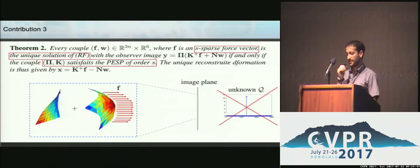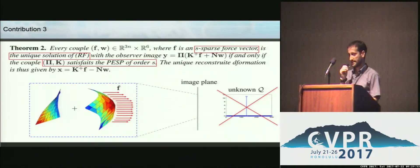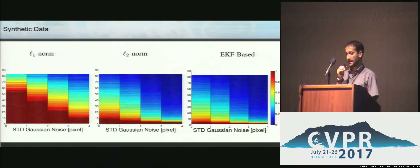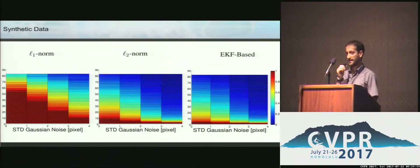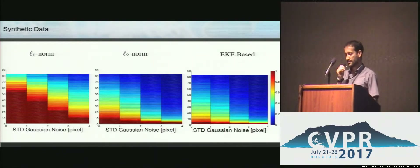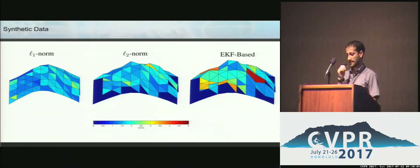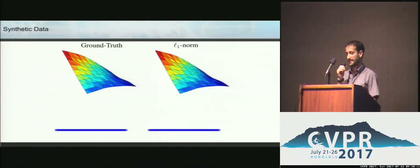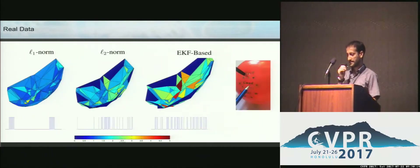We further push this result and show that if we have only the size of the support, we can still recover the ground truth. We ran simulation results varying image noise and the size of the force support, showing our approach performs better. Even without boundary constraints, there is some loss of accuracy on the boundaries, but the shape is still good.